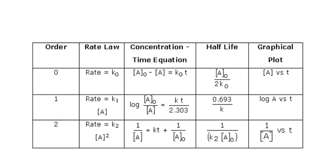The first-order graph is log A versus time. For a second-order reaction, the rate law is rate equals K times concentration of A squared. The concentration-time equation is 1 over final concentration of A equals K times time plus 1 over initial concentration of A. The half-life is 1 over K times initial concentration. The graph is 1 over concentration of A versus time.